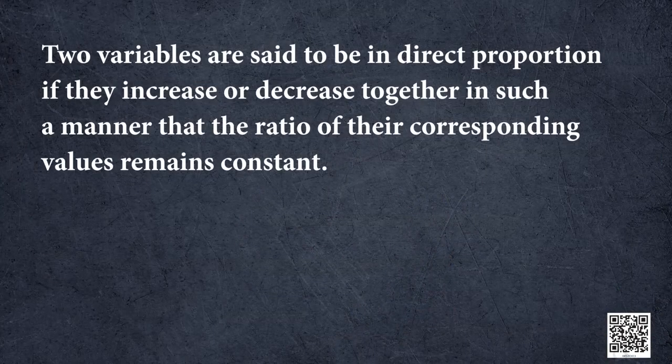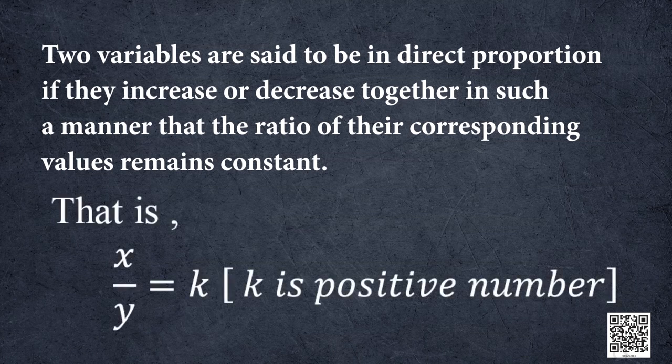We have seen that two variables are said to be in direct proportion if they increase or decrease together in such a manner that the ratio of their corresponding values remains constant. That is, if x and y are two variables, then x by y is equal to k, where k is a constant and it is a positive number.